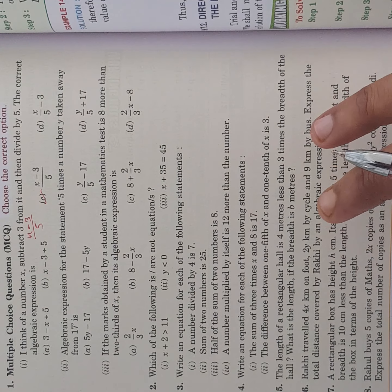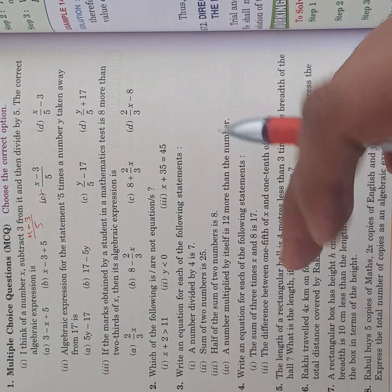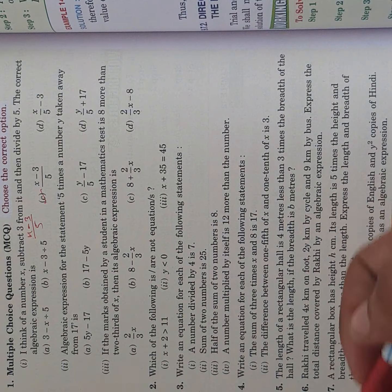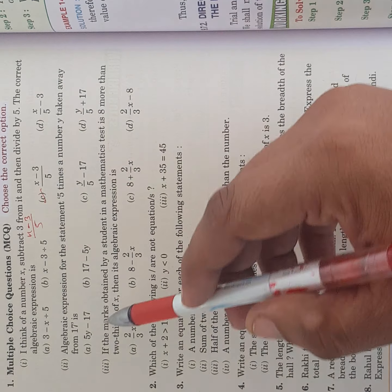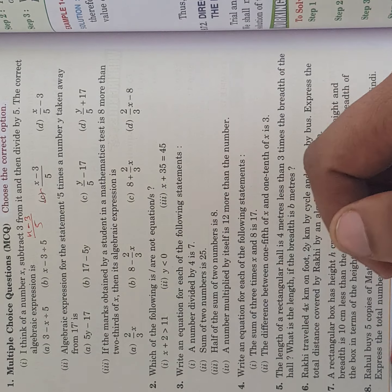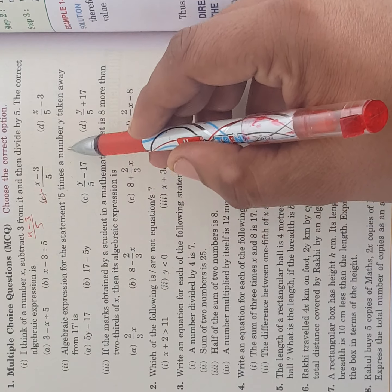Next one, algebraic expression for this statement: 5 times the number y taken away from 17. 5 times the number, then y taken away from 17. 5 times the number y.